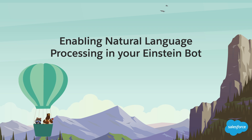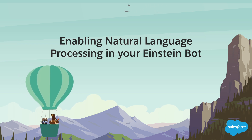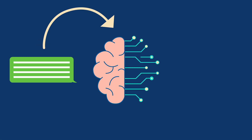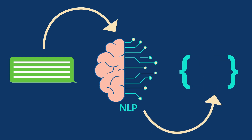Your customers expect to communicate with your bot using everyday language. Einstein Bots uses natural language processing, known as NLP, to turn any text from customers into data that the bot can use to take action.